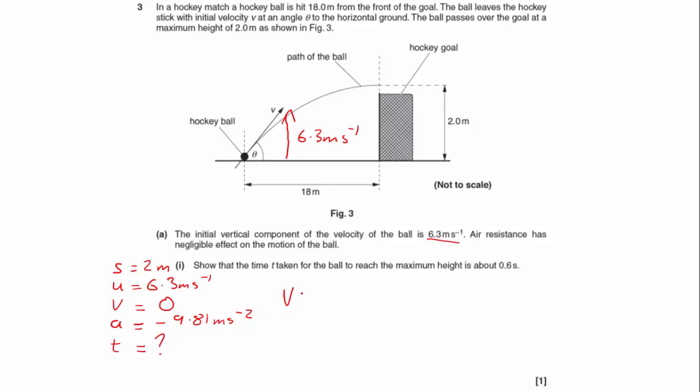So I would go with V equals U plus AT, because it's the simplest one. We know that V is 0, and that's going to equal U plus AT. So U will equal minus AT, therefore T is going to equal U over minus A. So, substituting, we're going to have 6.3 divided by minus minus 9.81, making it positive, stick those numbers into the calculator, and that gives me 0.64 seconds.